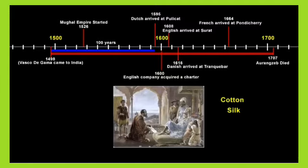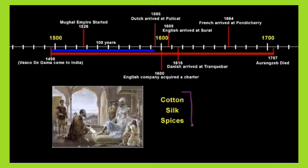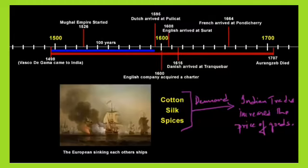In 1600, the English company acquired a charter and established their company in our India. They came by ship from Europe to India, especially for cotton, silk, and spices. They wanted to purchase these things and take them to the European side, because in those days there was very high demand in Europe for cotton, silk, and spices. So the Europeans were coming to India for trade.